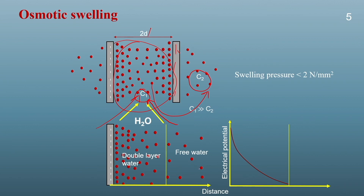Looking at the water molecules, as you move away from the clay plates the cation concentration keeps decreasing. The water can be divided into two types: double layer water and free water. Free water has properties like normal water, whereas double layer water is bounded by some attraction and repulsive forces. If we plot electrical potential versus distance, the electrical potential next to the clay plate is significantly higher and keeps decreasing as we move away, becoming almost 0 at a point far from the plate known as the reference point.